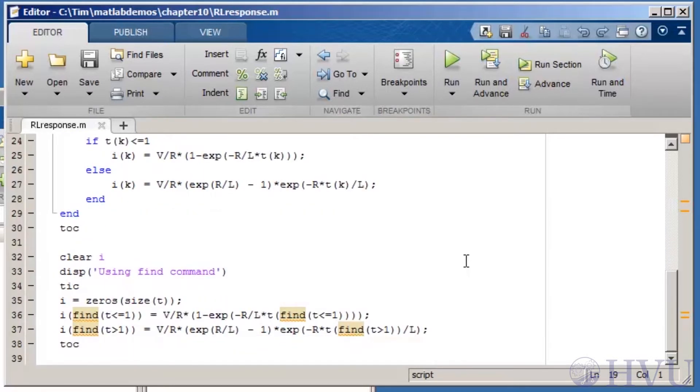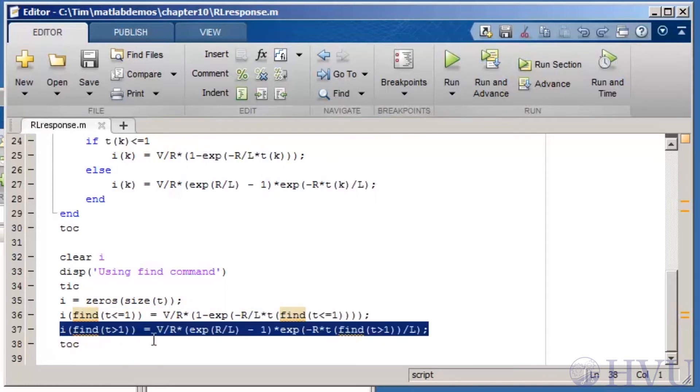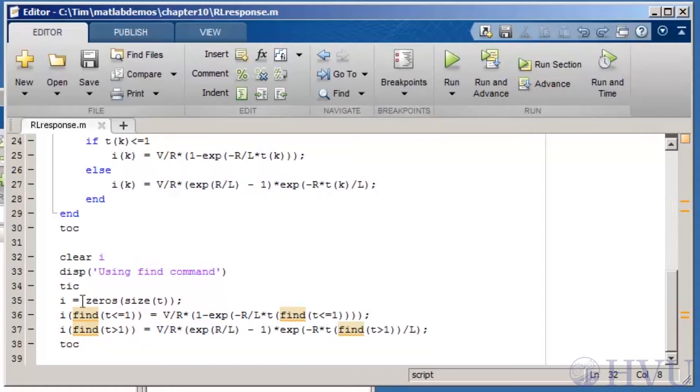Finally, I'll use array operations. First, I pre-allocate memory for I. Then I use the FIND command to determine which equation to apply to the values. The values of current corresponding to times less than or equal to 1 are calculated here. The values of current corresponding to times greater than 1 are calculated here. As usual, the TIC and TOC commands are used to find out how long this process takes.